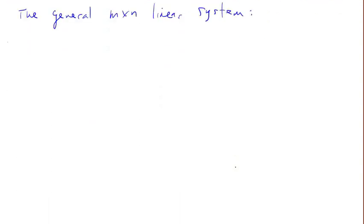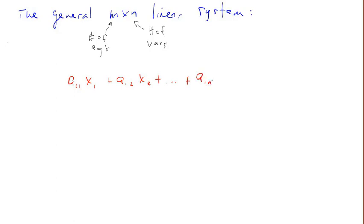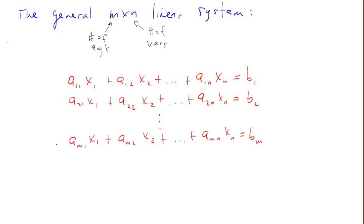Here's the general m by n linear system in standard form. m refers to the number of equations and n the number of variables. Our first equation looks like a11·x1 plus a12·x2 all the way down to a1n·xn equal to constant b1. Our second equation and so forth, down to the last, which is the m-th equation. The a's and b's are constants.